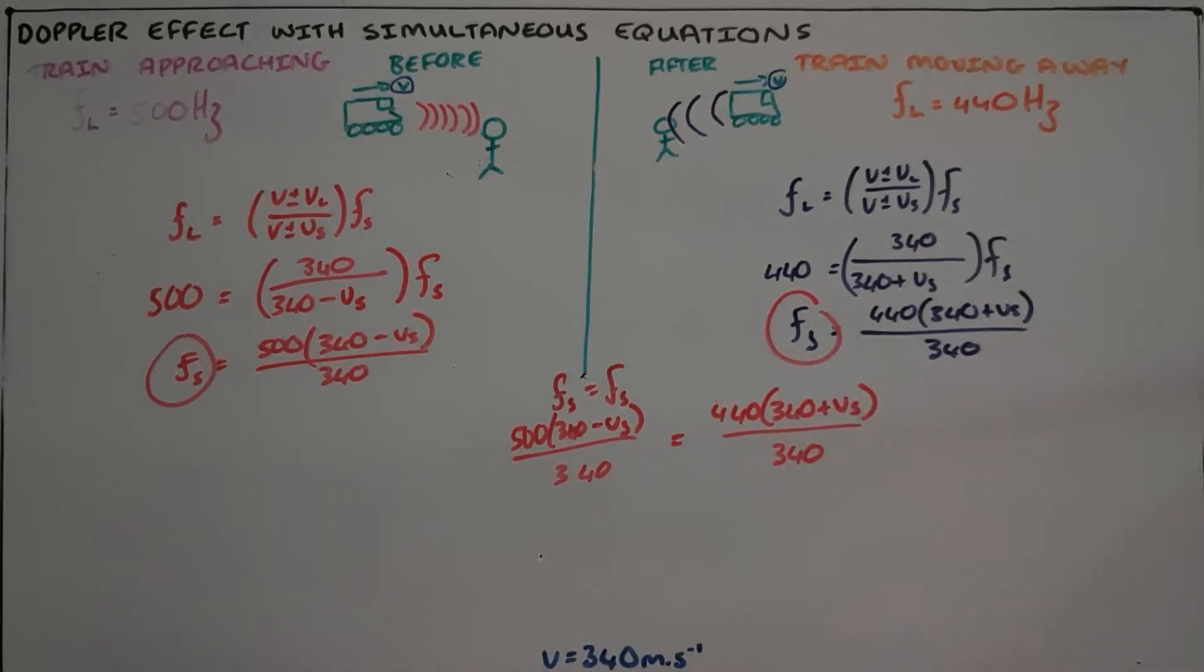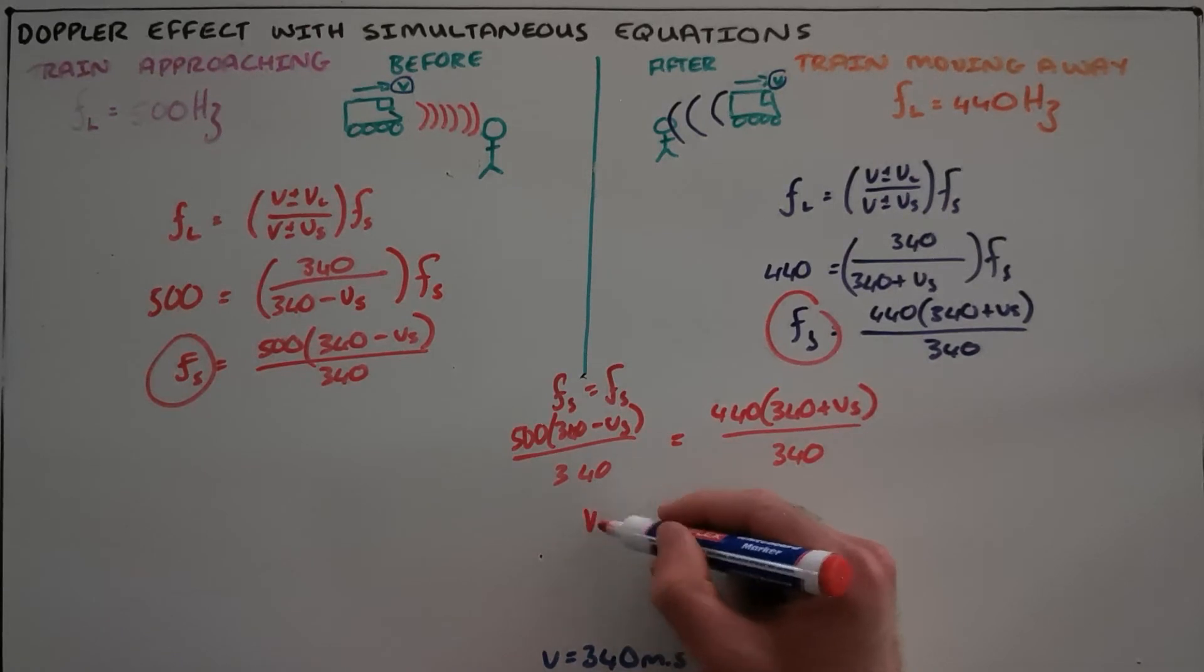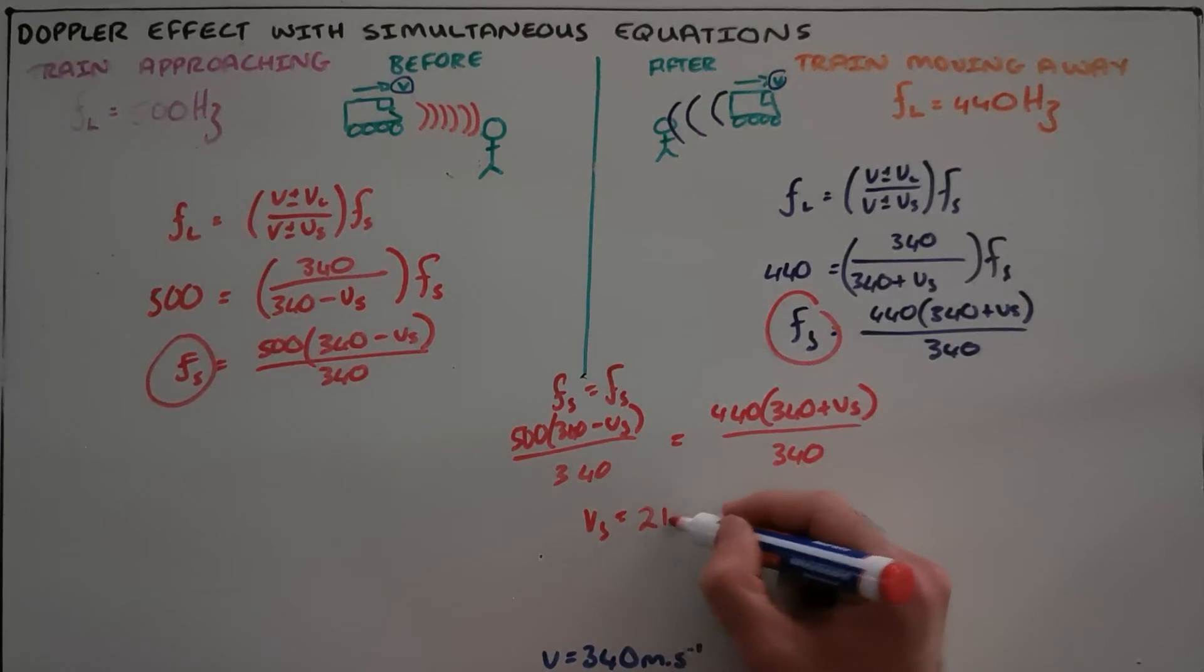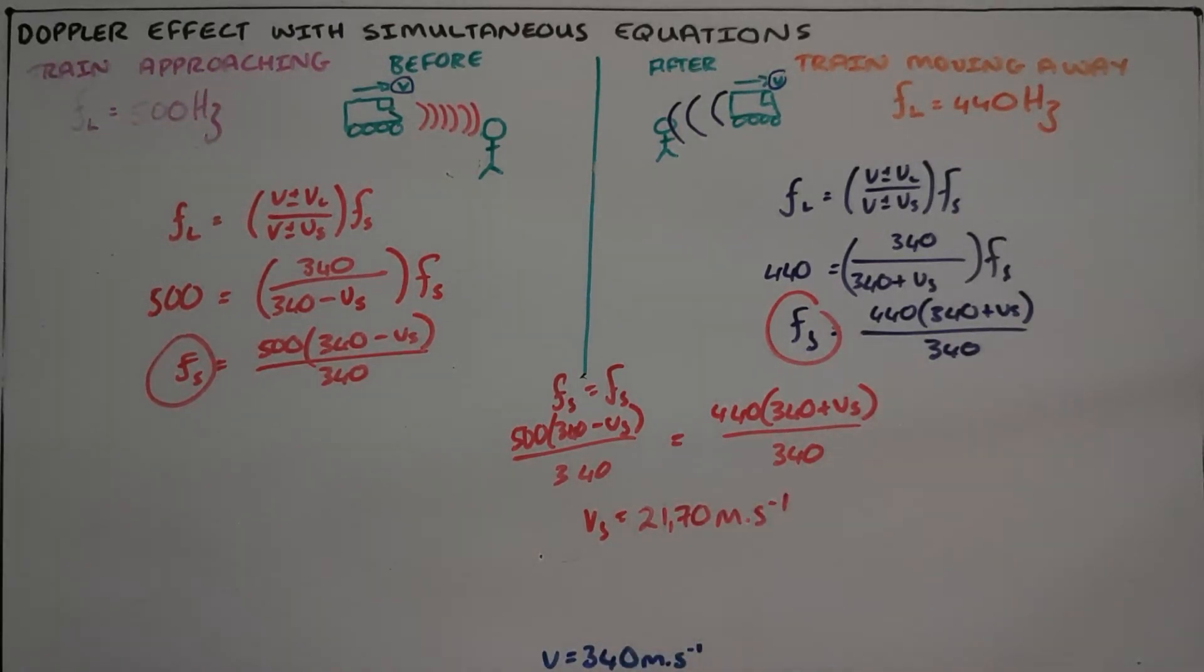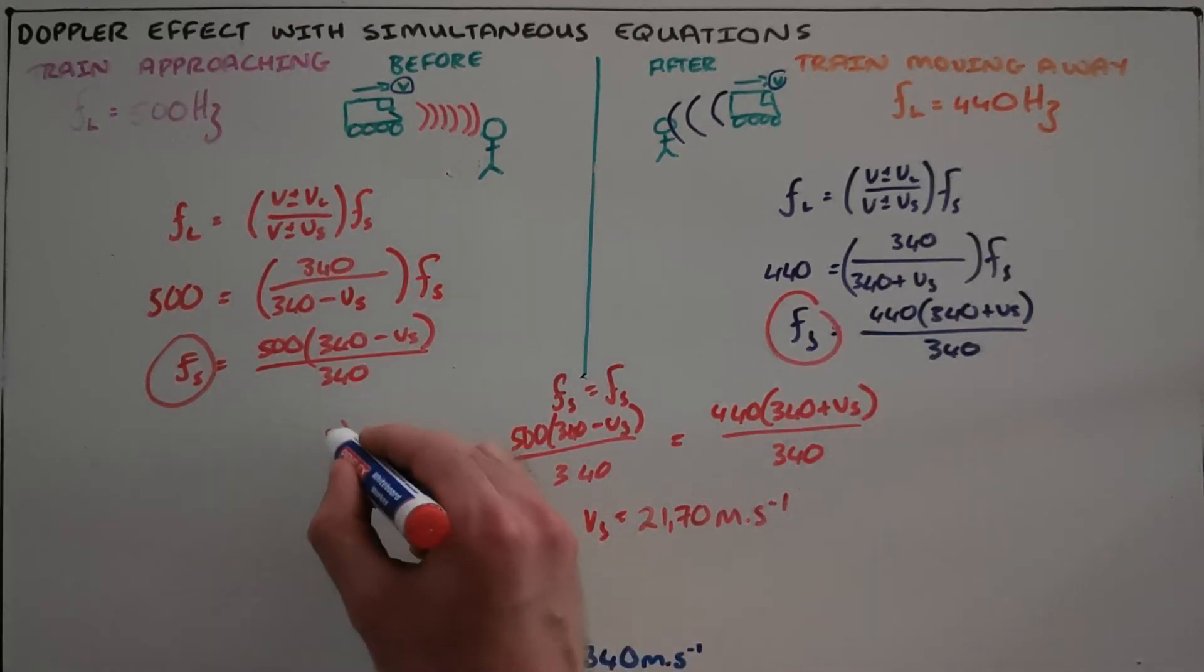And that then allows us through algebra to determine that the answer, the speed of this train, is 21.70 meters per second. Once we have this answer, we can then substitute it into either one of these two equations.